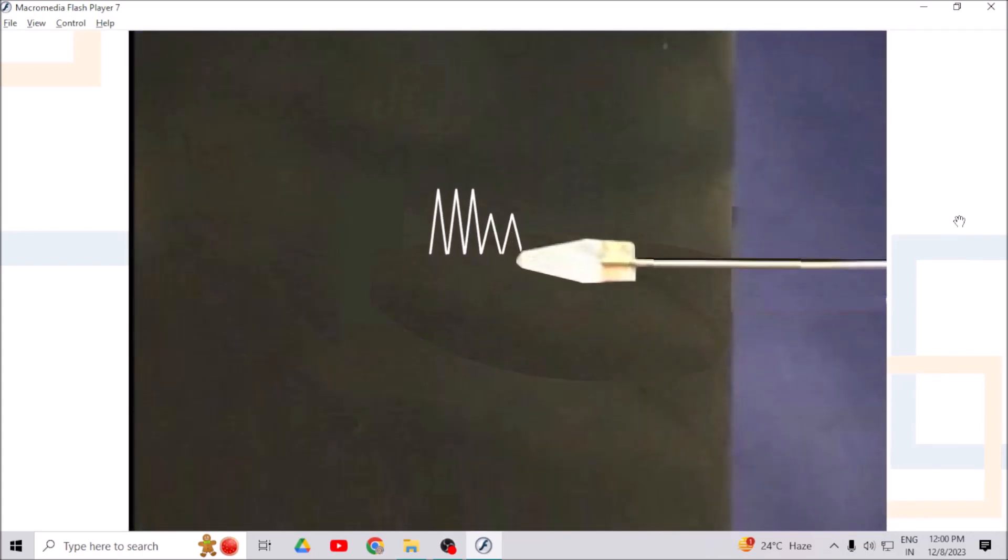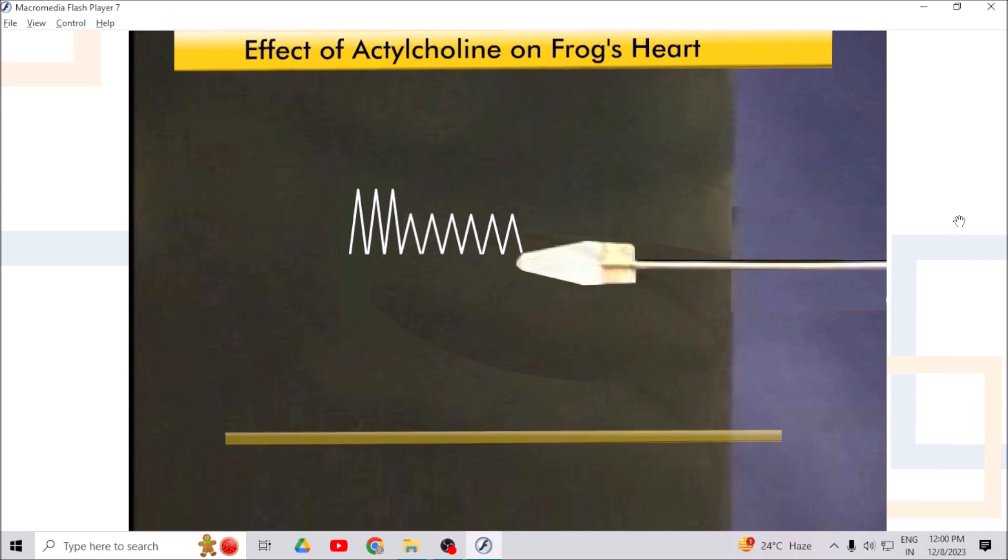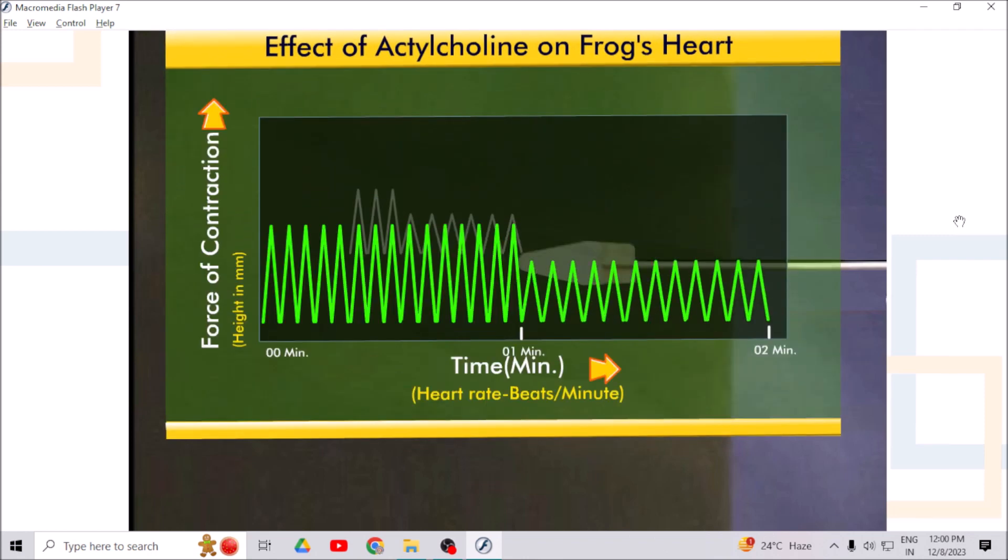Start the drum immediately and record the response of heart on the smoked paper for one minute again. You can see that the rate of contraction and force of contraction of heart decrease due to acetylcholine. Also observe the rhythmicity and tone of contraction.